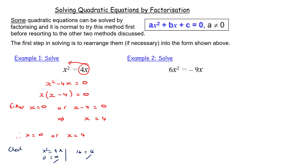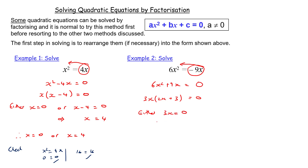Example 2: 6x squared equals minus 9x. I put a bubble around the minus 9x, float it over to the left — it becomes plus 9x — giving 6x squared plus 9x equals zero. Factorizing: both terms share a factor of 3x, so 3x times 2x plus 3 equals zero. Either 3x equals zero, meaning x equals zero, or 2x plus 3 equals zero, meaning 2x equals minus 3, so x equals minus 3 over 2.